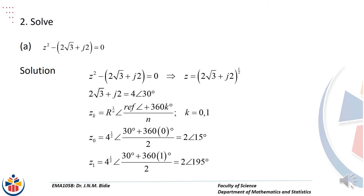We take the complex number 2√3 + j2 and write it in polar form to make life easy, because we need r and the reference angle theta. Both x and y are positive so we're in the first quadrant — our reference angle of 30 degrees is in the correct quadrant. r equals the square root of x² plus y², and in our case we get r equal to 4.